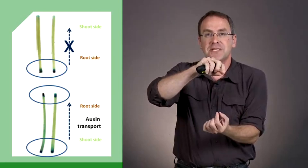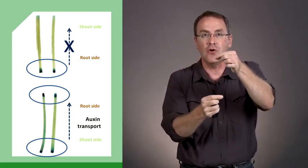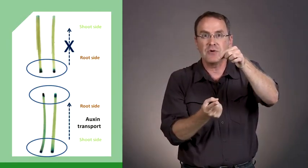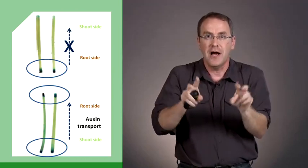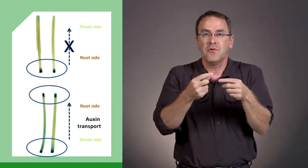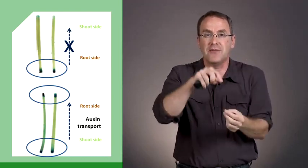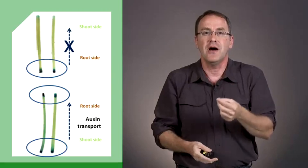But if I do the opposite, I turn the stems over such that the side that was close to the shoots is now on the bottom, I see the auxin is transported up the stem, which is analogous to what would normally be down the stem, towards the area of the roots.